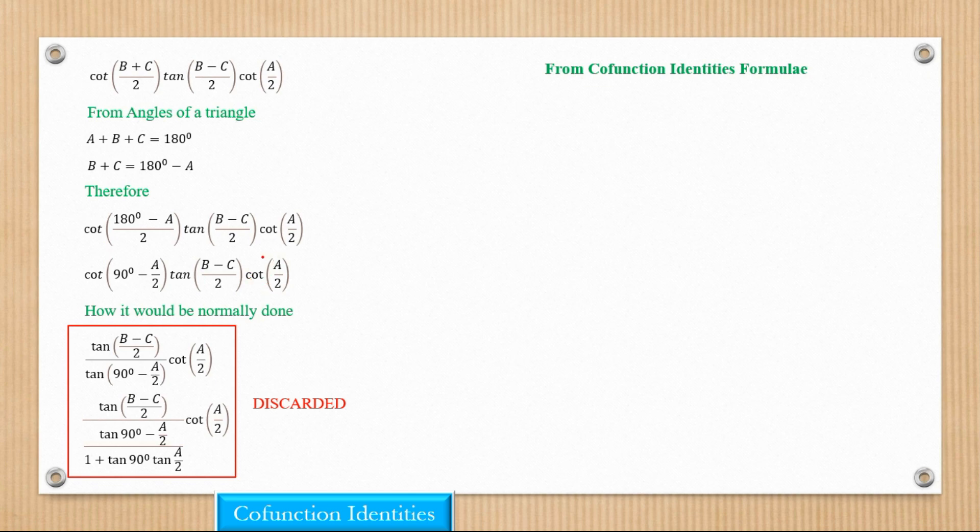Now, we know that this side here can be represented as 1 over tan(A/2). So this side here can be represented in form of tan. So what happens is, let's convert this. Let's get a cofunction identity that relates a cot to a tan.